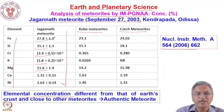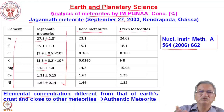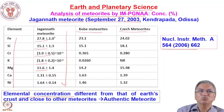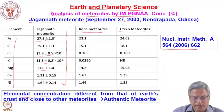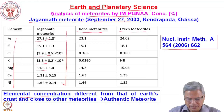The elemental concentration of the Jagannath meteorite was found to be different from that of the Earth's crust and close to other known meteorites. This confirmed it is an authentic meteorite. Sometimes people might pass off a rock as a meteorite for commercial purposes — neutron activation analysis provides scientific evidence to verify authenticity and to study the source of these meteorites in the field of earth and planetary science.